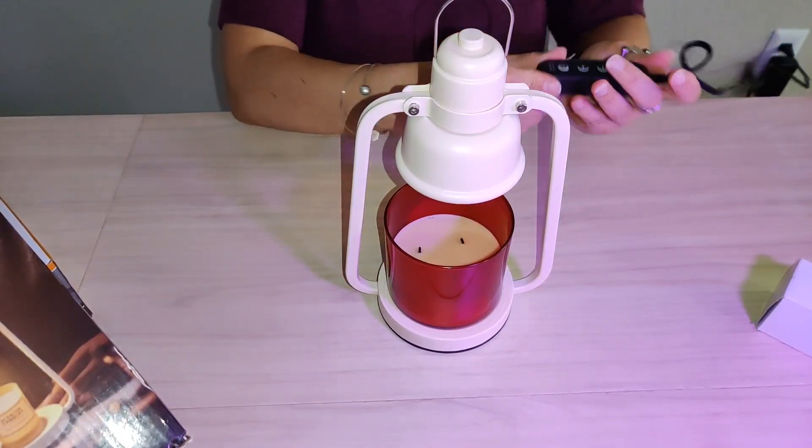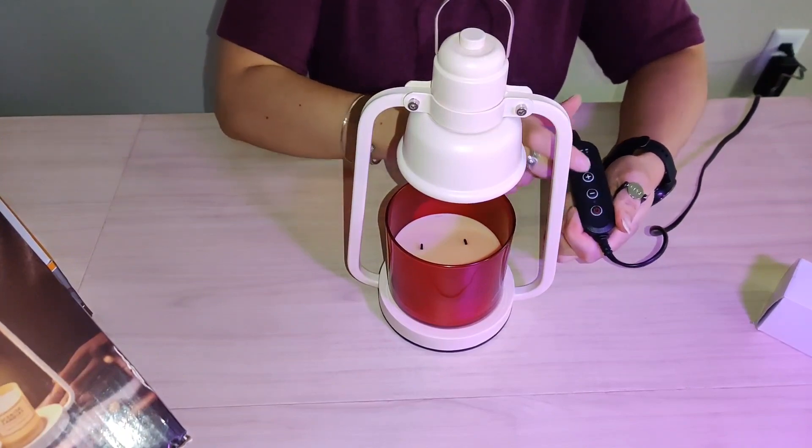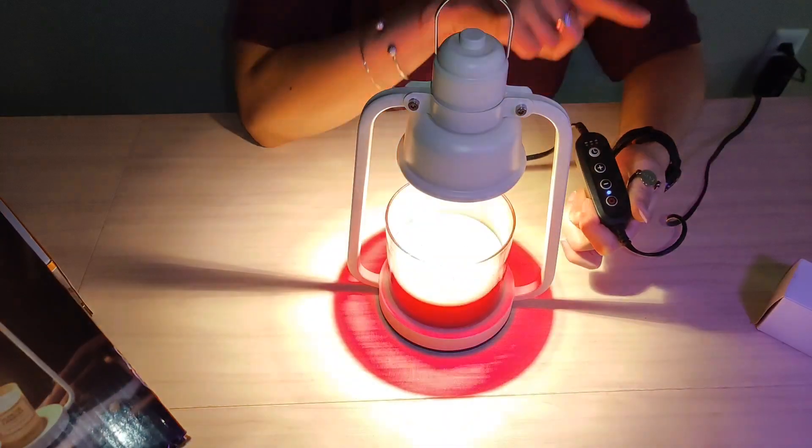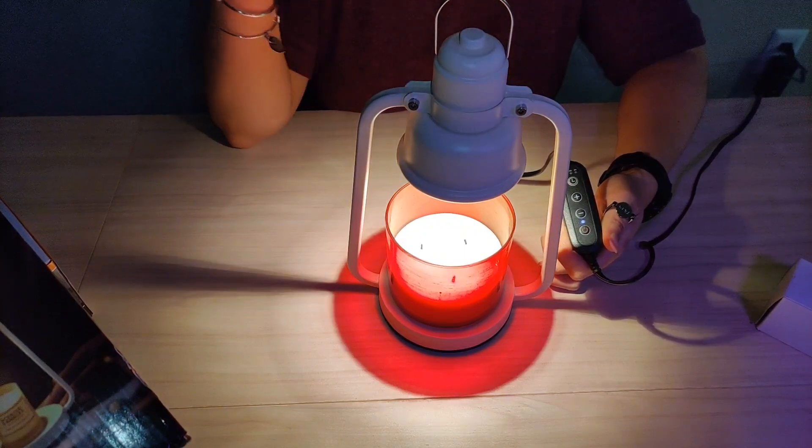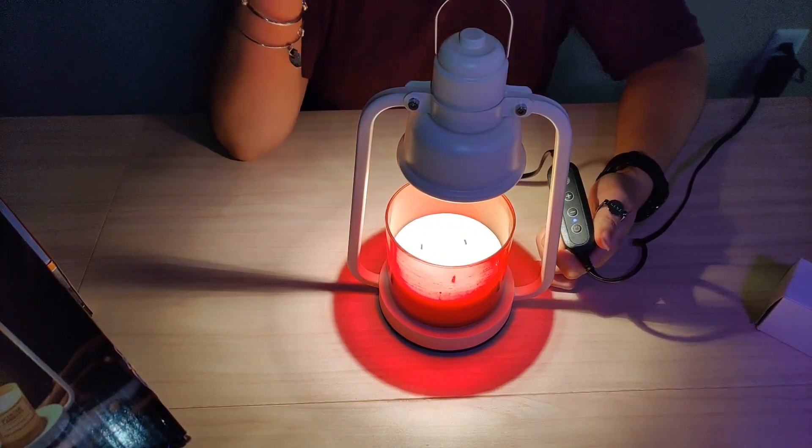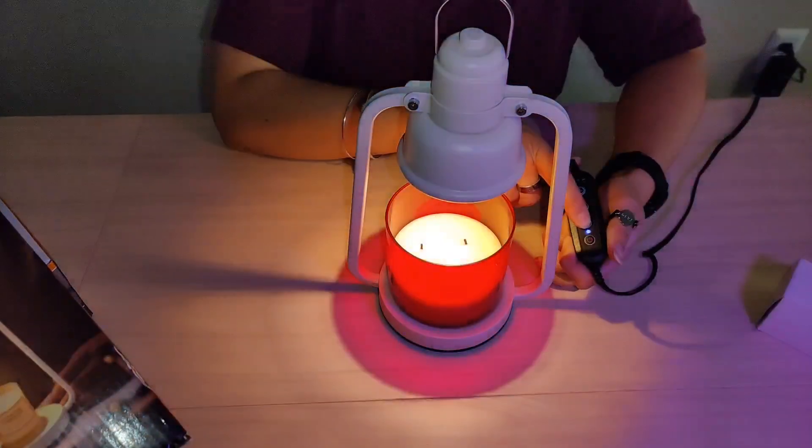Now with this controller, you have the on and off button. You have how bright, so let's go ahead and put it on. You have how bright it is. It's going to start to actually melt the candle. Takes about two to three minutes to start actually melting and getting those aromas.